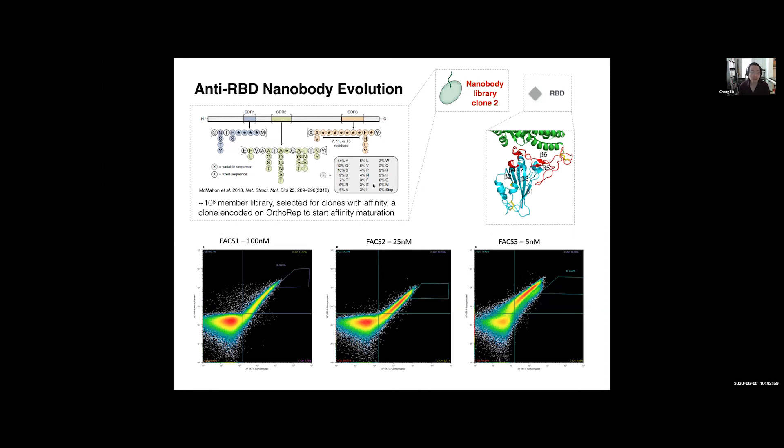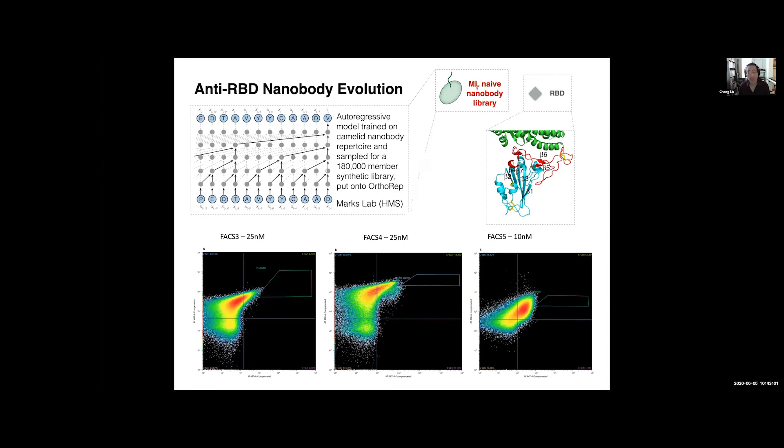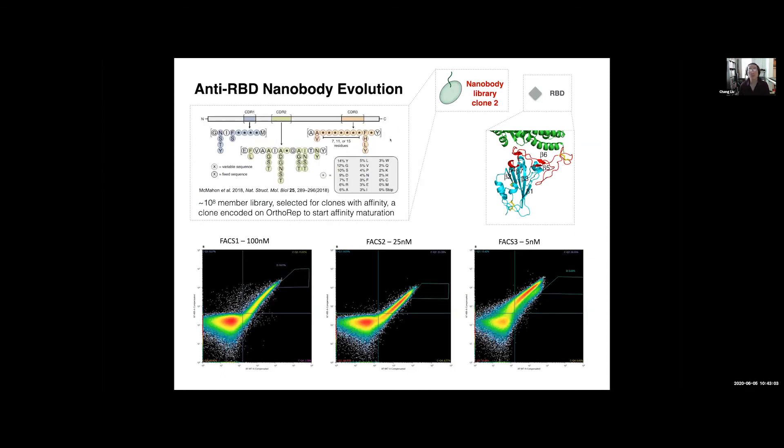Here's another example where we're not using this ML design library, but we're using a more traditional library that has very high diversity. But we first pre-enrich for some clones that bind RBD, and we select those clones, and these are weak binders. But then if we take those clones and clone them, put them onto OrthoREP, you can affinity mature and get better binders. So here you see that emergence of a new population that this line is showing, and now we're able to bind lower concentrations of RBD.